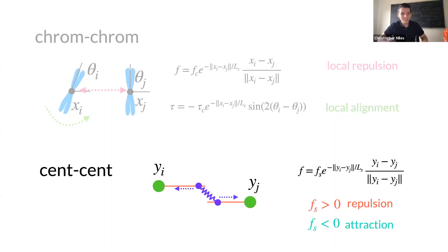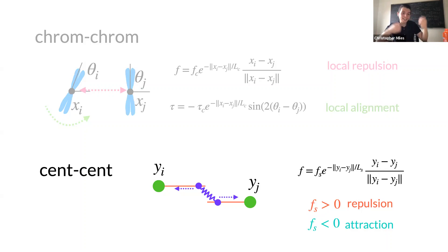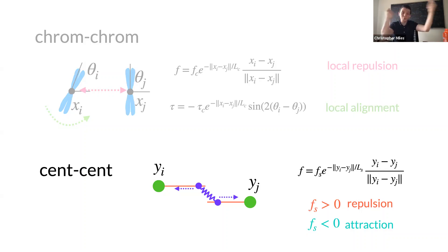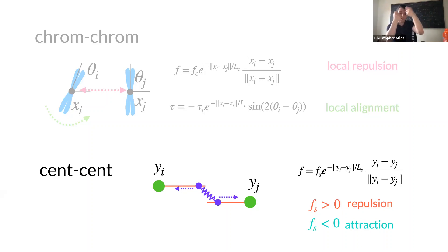The second interaction type is pole-pole interaction, which we think of as coming from the molecular motors. We're not including them directly, but there's some effective force between the two poles. We're not sure if they pull together or push apart — that's controlled by a parameter f_s. The magnitude f_s controls whether the poles pull together or push apart, and we leave that to be determined.